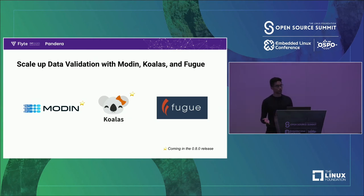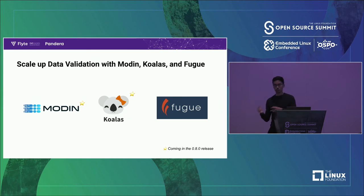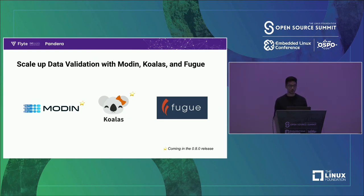One limitation I want to call out is that Pandera operates on pandas data frames, which comes with the limitations of pandas itself. If you want to validate very large data sets, it's currently not really possible. You might come up with a solution that distributes it with some other framework — for example, Fugue allows you to apply the schema to partitions of your distributed data frame and scale that way. Coming in the next release of Pandera is support for Modin and Koalas — it's a work in progress. This lets you apply the same schema specification to those other data frame libraries.